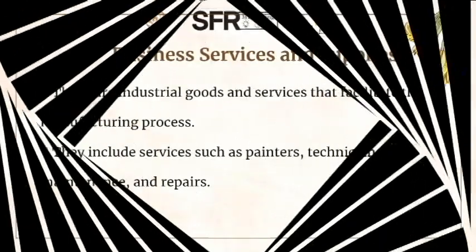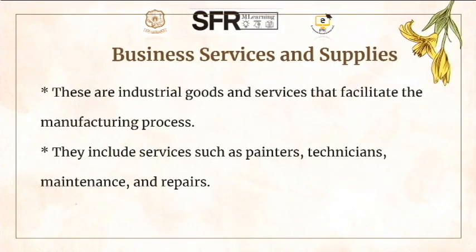Business services and supplies: these are industrial goods and services that facilitate the manufacturing process. They include services such as painters, technicians, maintenance and repairs. Supplies such as lubricants and stationery are also included in business services and supplies.